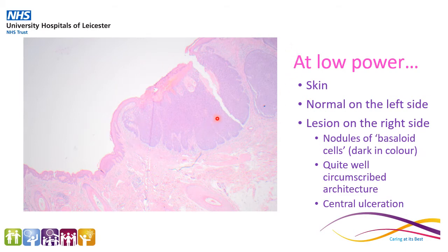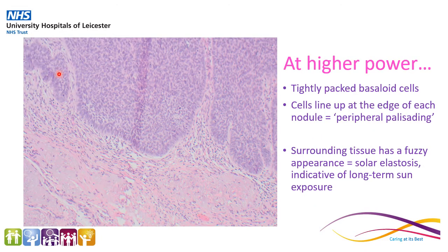This would be described as nodules of basaloid cells. These are dark in colour and it's quite well circumscribed — I can draw a line around it quite nicely. And there is an area of central ulceration, which was what he would have seen as the scab. Looking at higher power, we've got tightly packed areas of these basaloid cells, i.e. dark-coloured cells. These show an interesting feature where the cells at the edges of the nodules line up in a feature we call peripheral palisading. This picture also shows that the surrounding tissue has quite a fuzzy, bluish appearance. This is something we call solar elastosis, and this is indicative of long-term sun exposure.